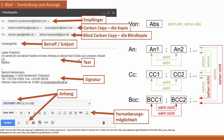Zum Aufbau einer E-Mail: Wir haben den Text, der eingetippt wird. Dann haben wir eine Signatur, die mit Strichen gekennzeichnet wird – alles darunter stellt so etwas wie eine eigentliche Adresse dar, also wo jemand wohnt. Dann kann man einen Anhang einfügen, indem man ein Symbol wählt und den Dateipfad angibt. Außerdem gibt es Formatierungsmöglichkeiten: Man kann Text fett, kursiv, unterstrichen und so weiter formatieren.